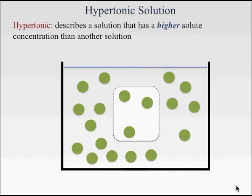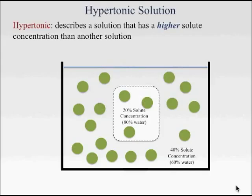A hypertonic solution describes a solution that has a higher solute concentration than another solution. In this case we take the same cell that we had before with a 20% solute concentration and 80% water and put it into a hypertonic solution. The hypertonic solution has a 40% solute concentration and therefore is 60% water.